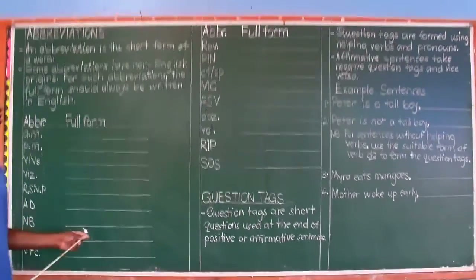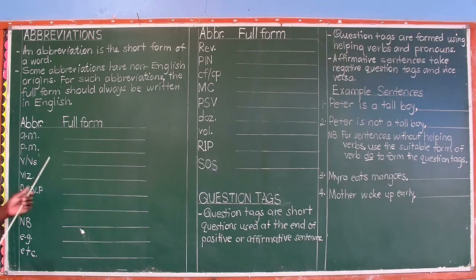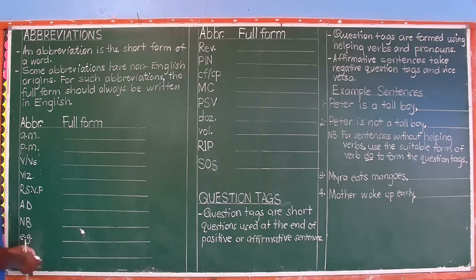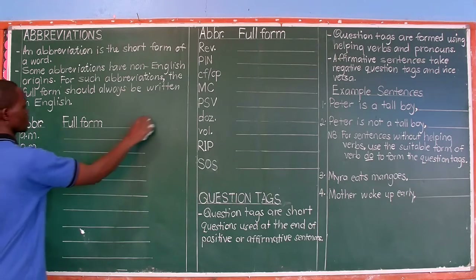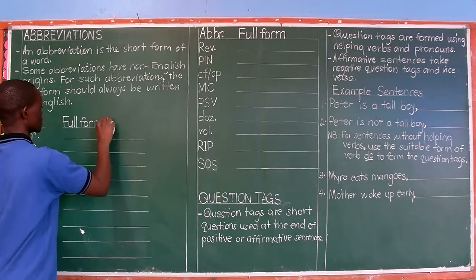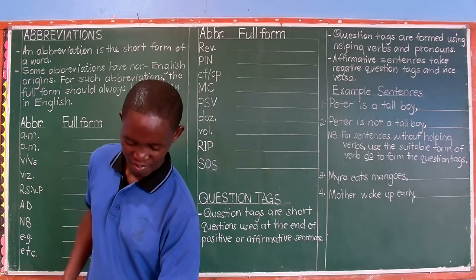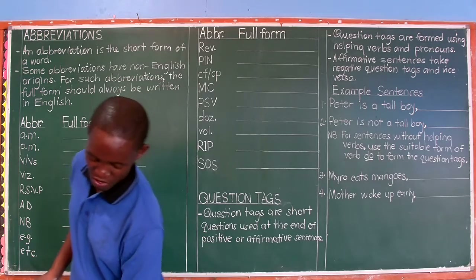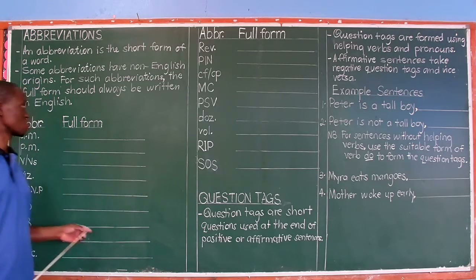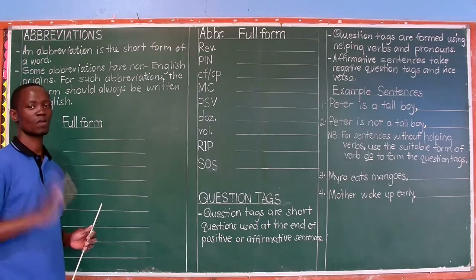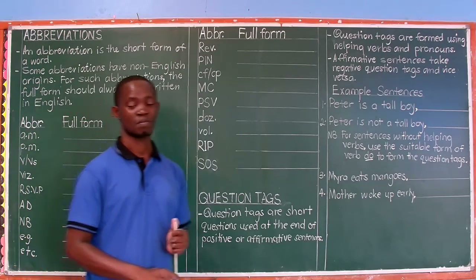Welcome to this lesson, ladies and gentlemen of tomorrow. It's P6 English. Our topic is using a dictionary and we are looking at term three work. By the way, it's the last topic of term three. It's now a discussion about using a dictionary, and under this topic we are looking at something to do with abbreviations.